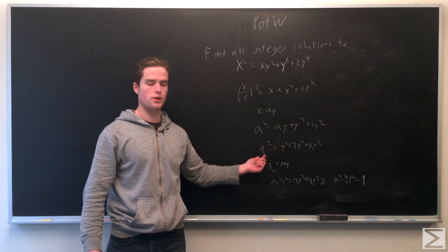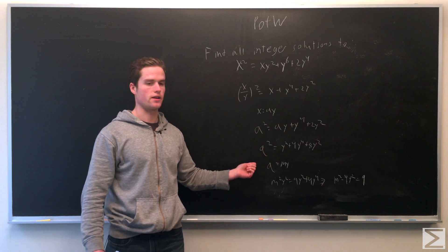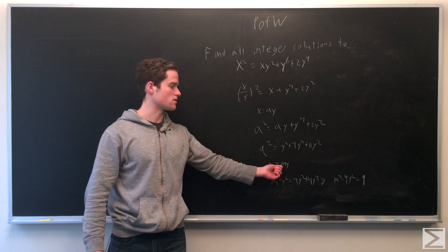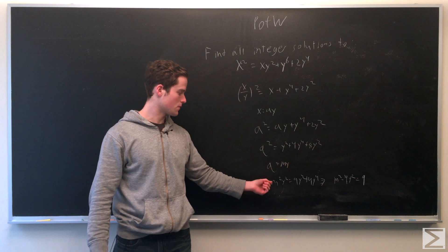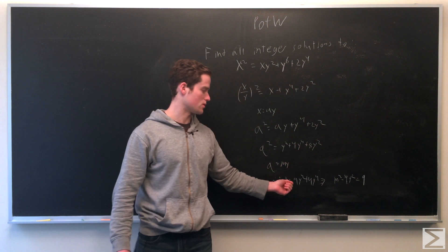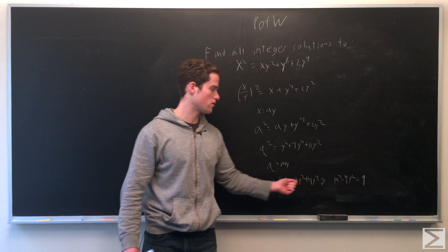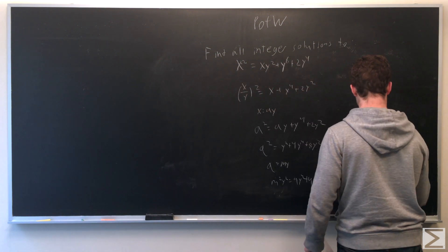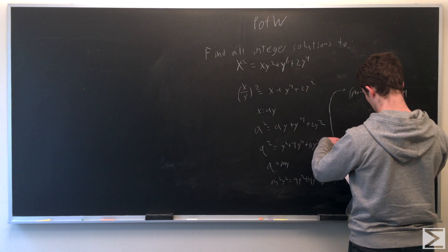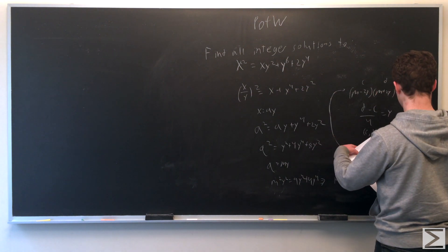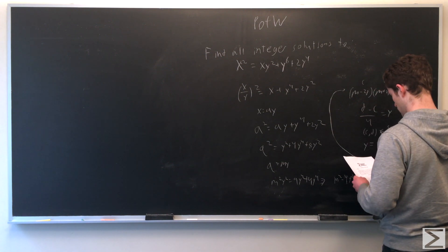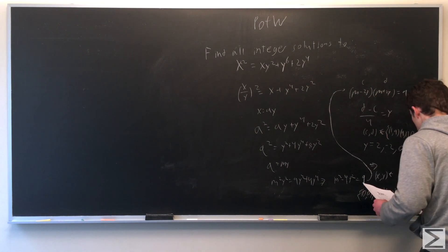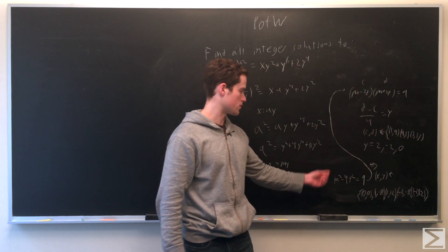From this, again, we can divide by y squared. So q over y is again going to be an integer, meaning q equals some integer m times y. Plugging that in, we get m squared y squared equals 9y squared plus 4y to the fourth, or m squared minus 4y squared equals 9.